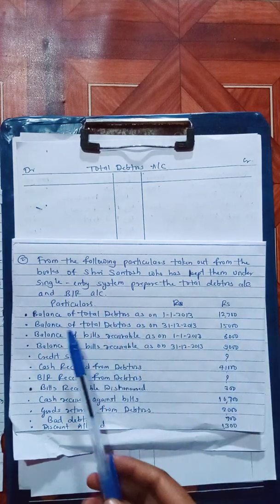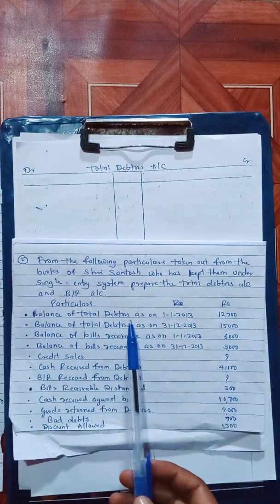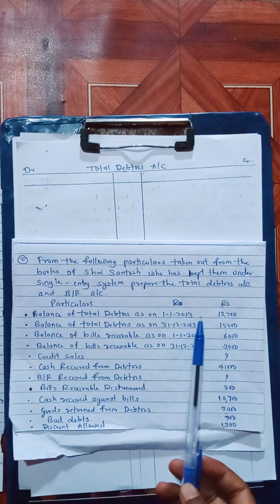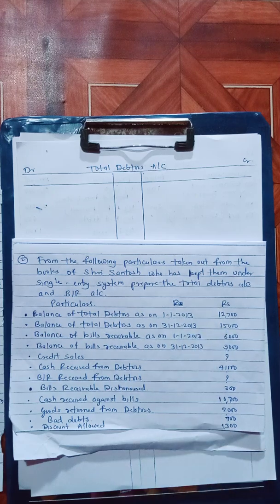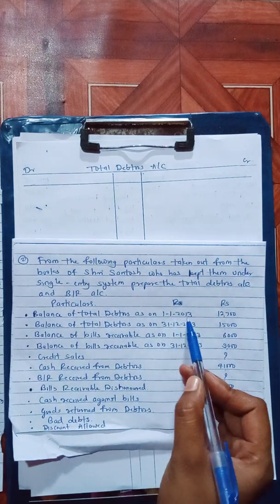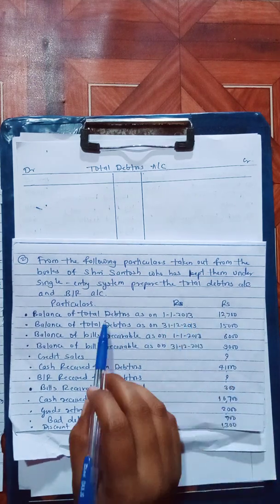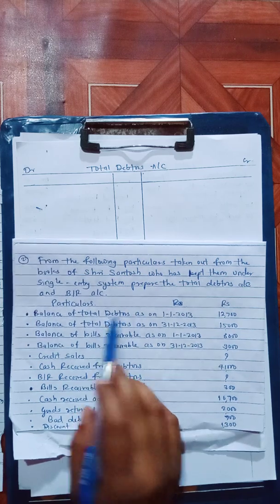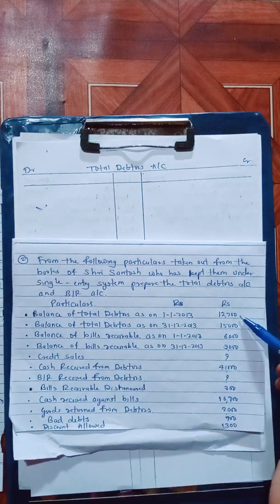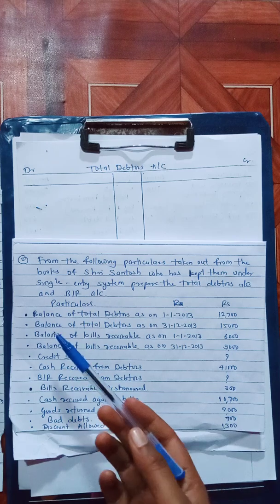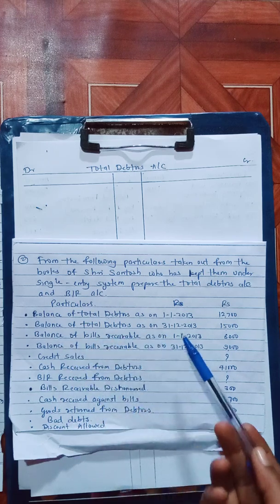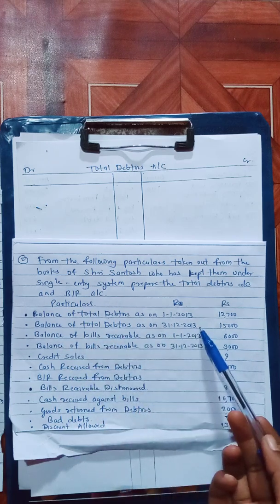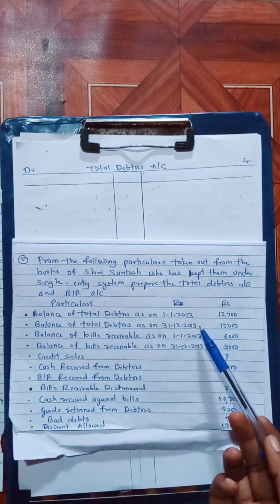The particulars and amounts are: balance of total debtors as on 1-1-2013, which means the opening debtors — opening balance — that is 12,700. Balance of total debtors as on 31st December 2013 will be the closing balance.